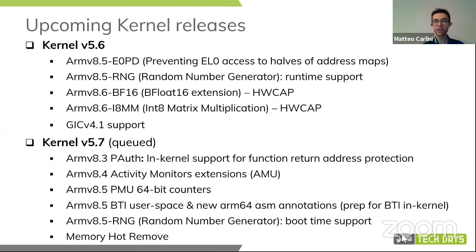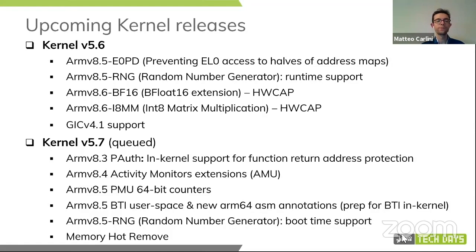In 5.7, some of which I mentioned already: in-kernel pointer authentication, activity monitors extensions queued for 5.7, PMU 64-bit enablement — so 64-bit counters from the 8.5 architecture — also included. BTI user space support is queued, and the RNG boot-time support. The last one I'd like to point out is memory hot remove. Memory hot plug has been enabled since a few releases ago. The only bit missing was hot remove, and hot remove is now there and will be merged into the 5.7 release cycle.